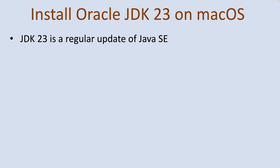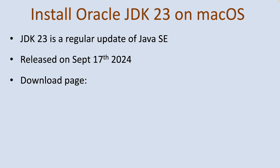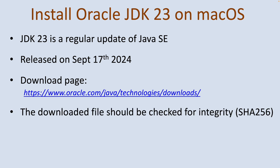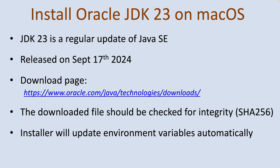Oracle JDK version 23 is the commercial distribution of JDK version 23. It is the regular update of the Java SE platform. JDK 23 was released on September 17th, 2024. It is strongly recommended to download the Oracle JDK 23 installer from its official download page. The downloaded file should be checked for integrity via SHA-256 checksums, and the installer will update environment variables automatically.